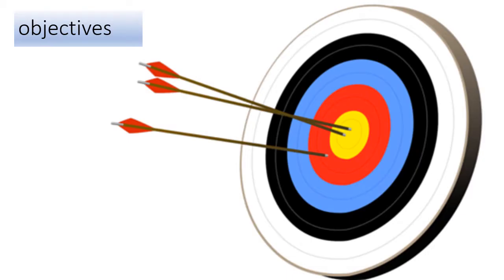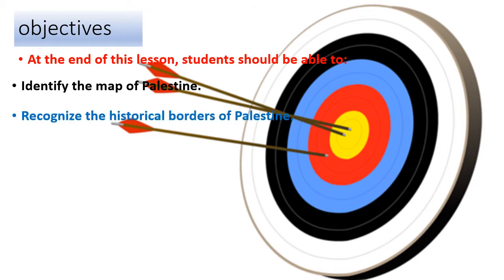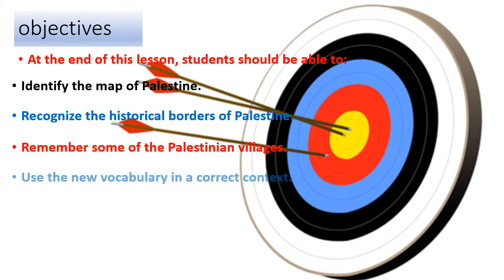Today we have some objectives and we need to be sure that at the end of this lesson we achieve the following: identify the map of Palestine, recognize the historical borders of Palestine, remember some Palestinian villages, and use the new vocabulary in a correct context.